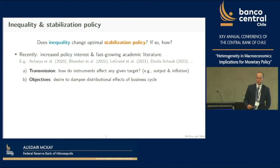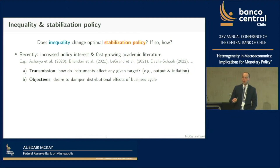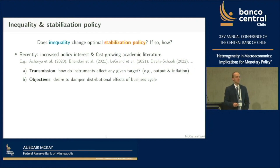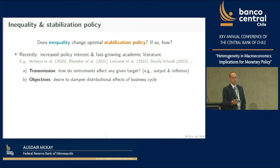In my talk, as was just brought up at the end of the Q&A session, I think it's very useful to distinguish between what I'll call the transmission mechanism and objectives. If we have a certain policy tool and we move it, we want to know what happens to output or inflation—that could be different with heterogeneous households. A second consideration is what we're trying to achieve: the objectives of the policymaker could also change when we introduce heterogeneity, perhaps through redistribution considerations.